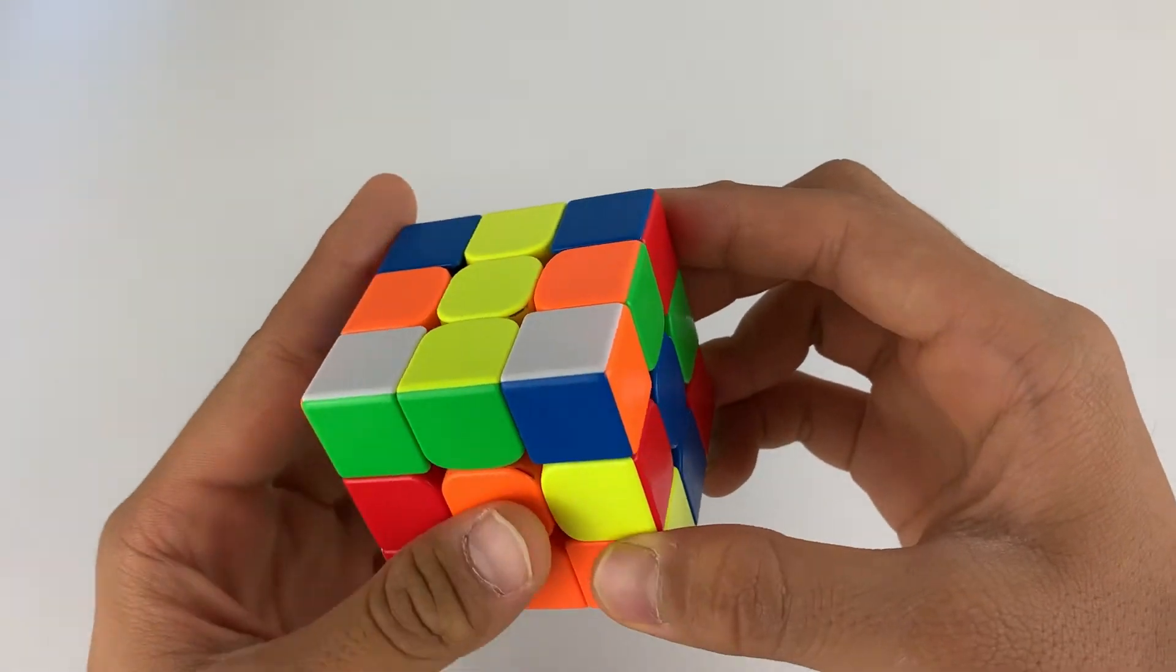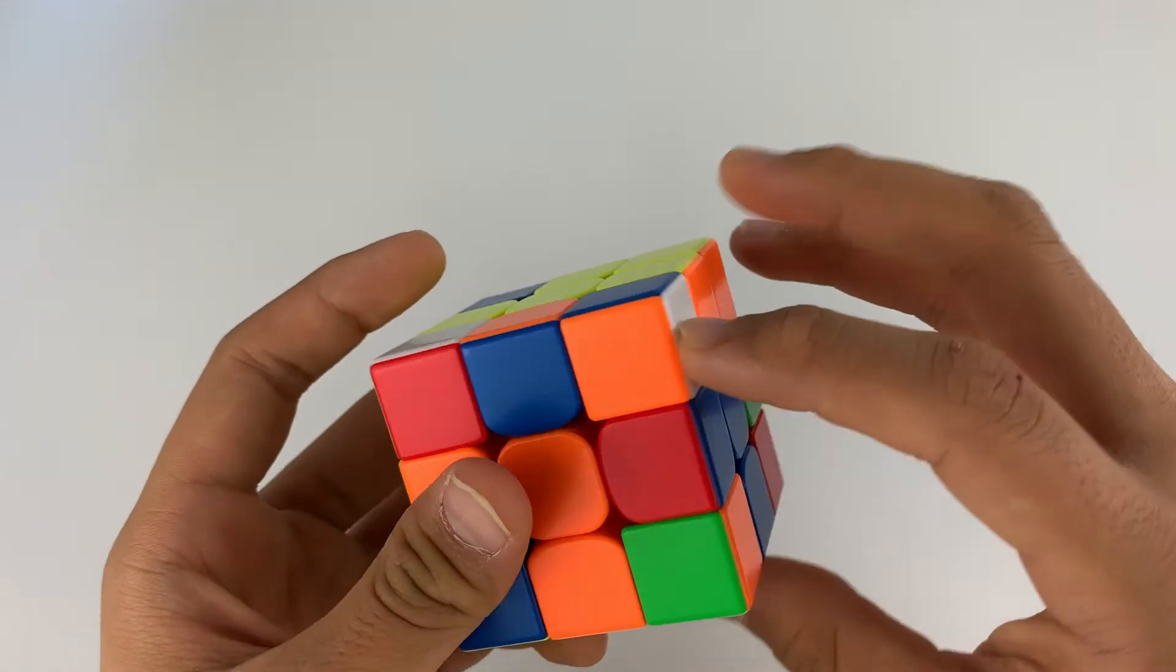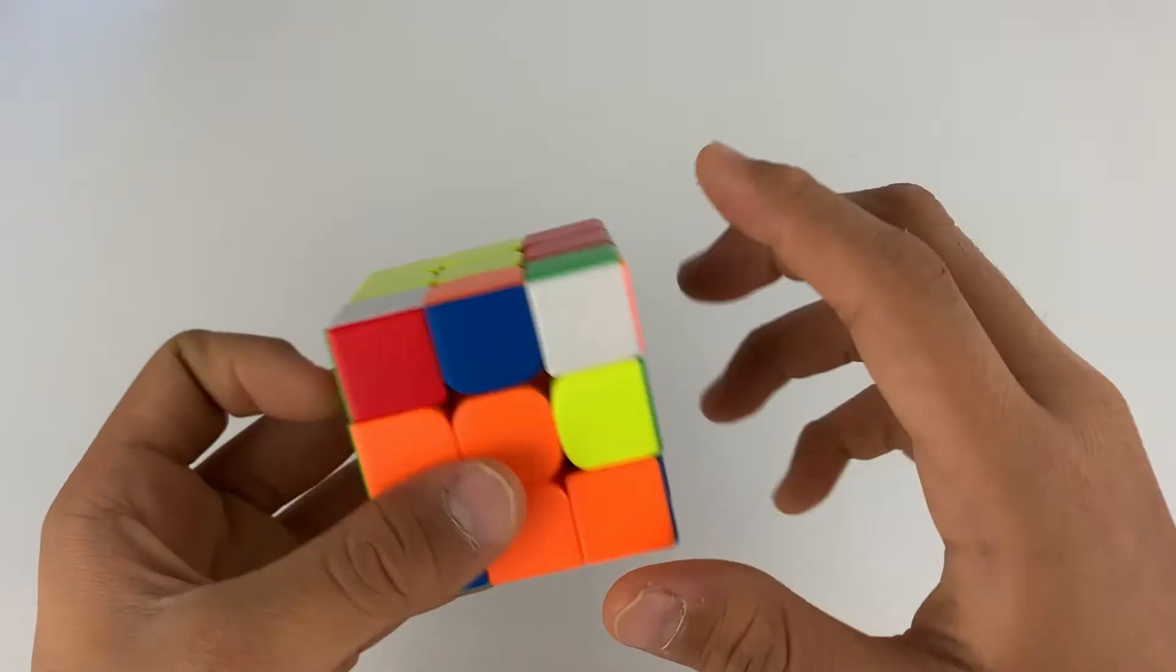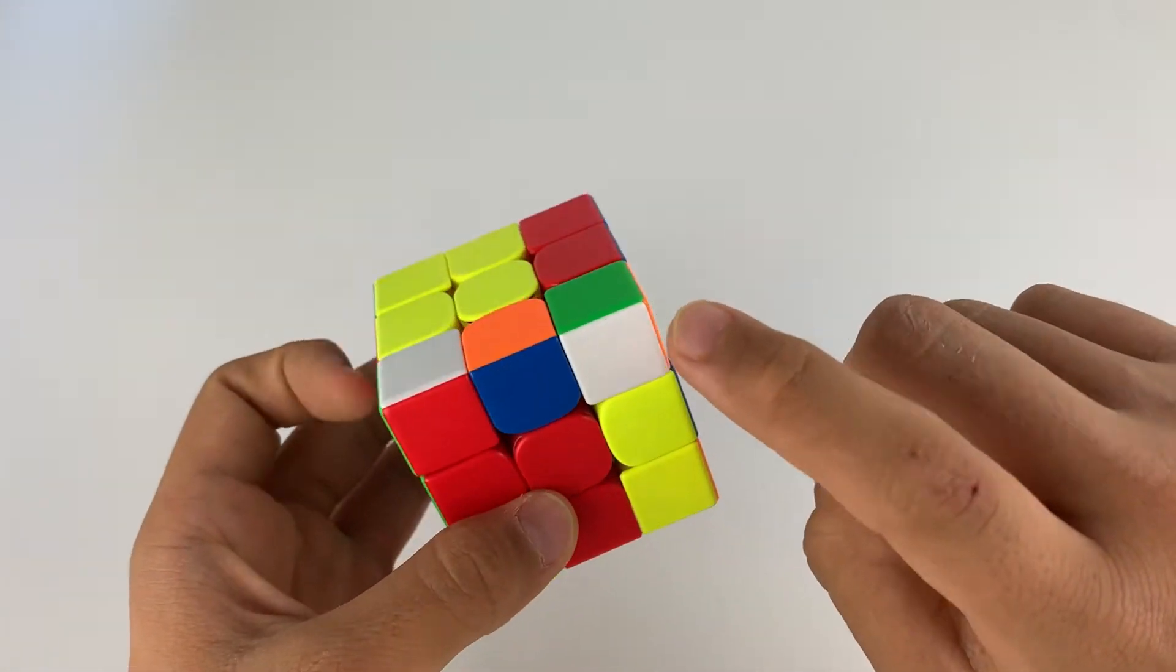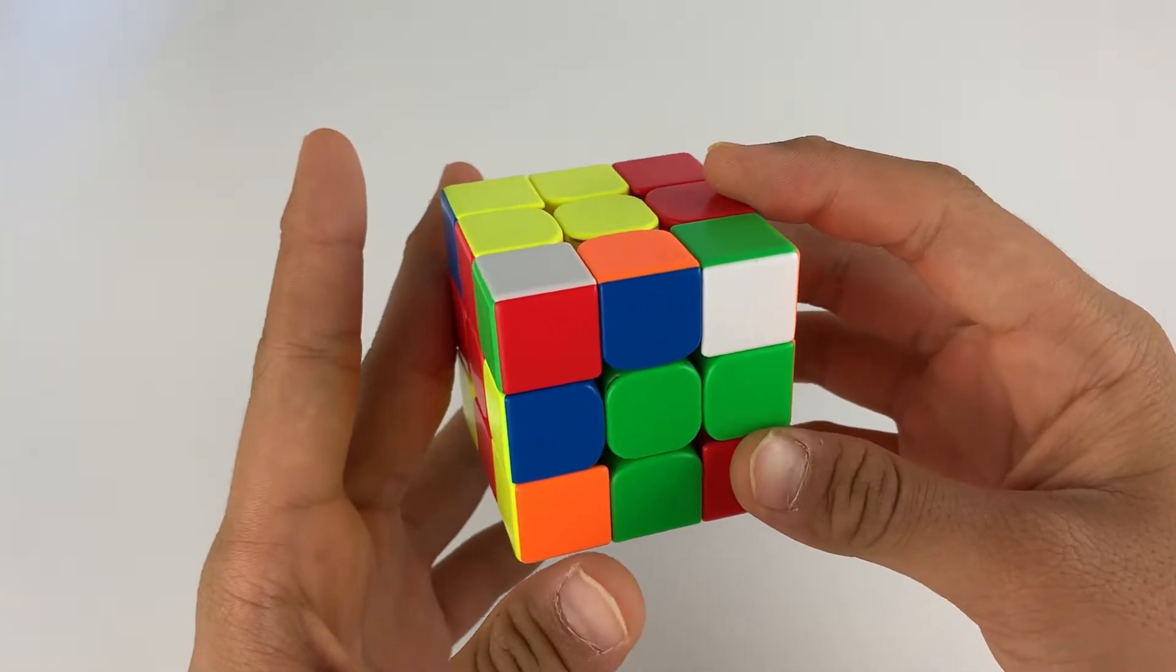This next tip is for first layer. For first layer, you can run into a couple of cases. This is the first one where you do sexy move once and it goes in. However, this is a really annoying case as you'll have to do sexy move five times just for it to go in.